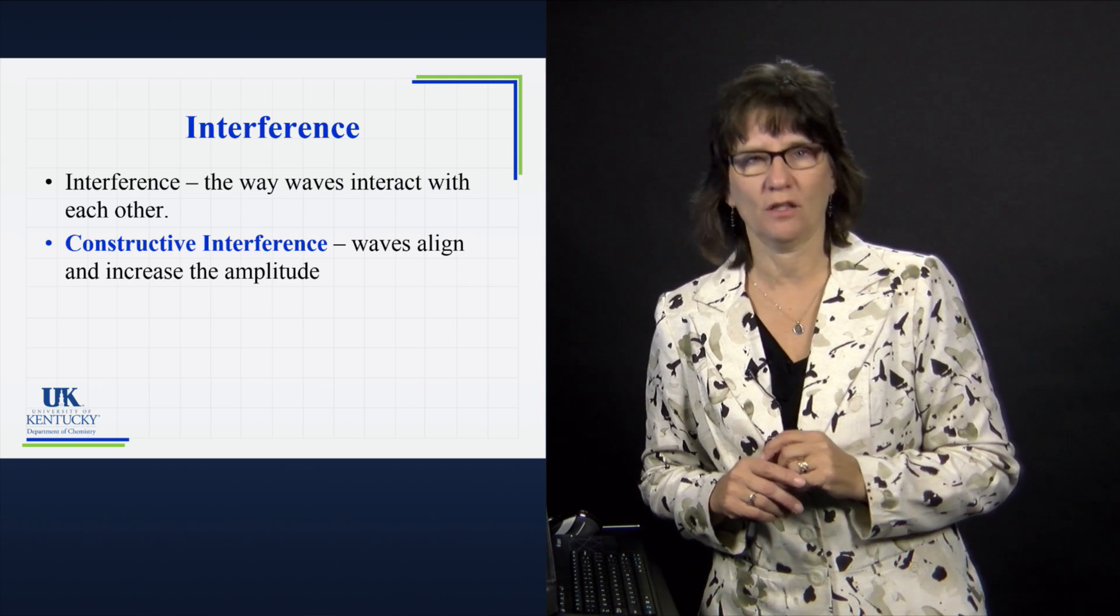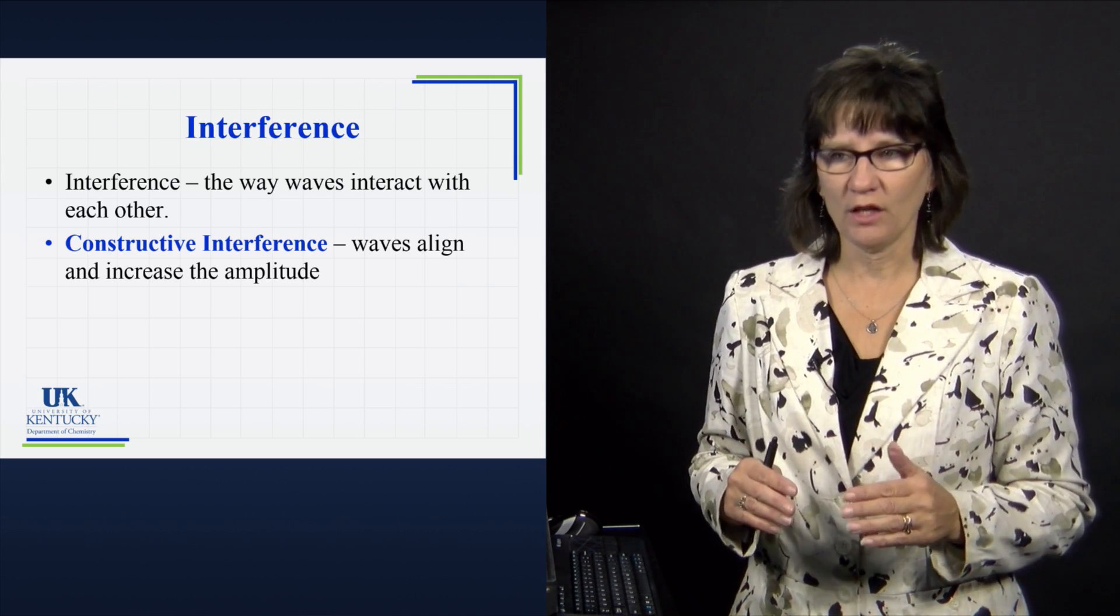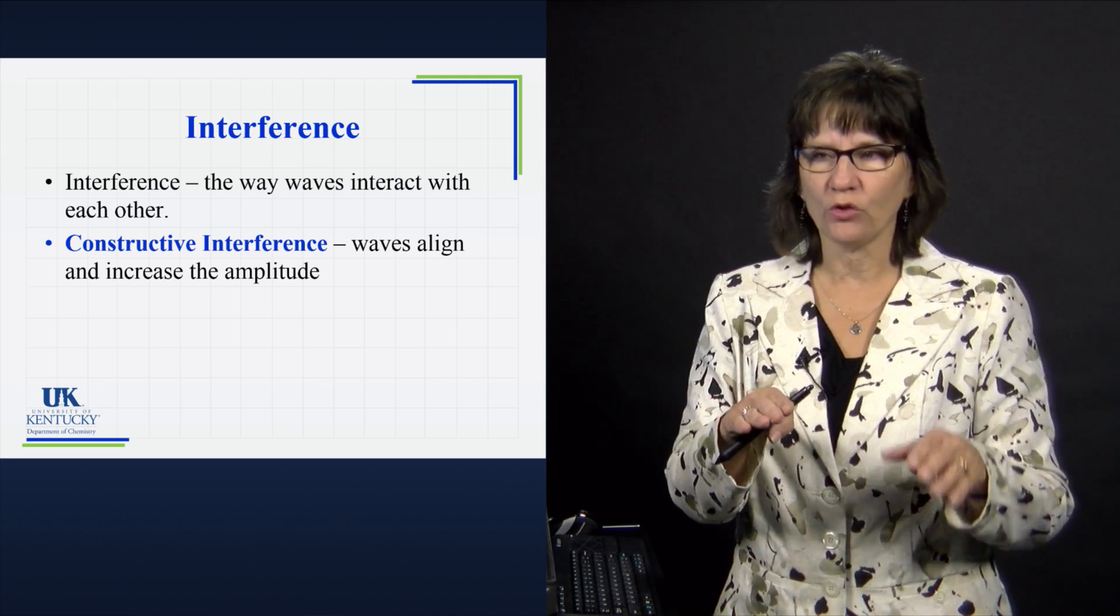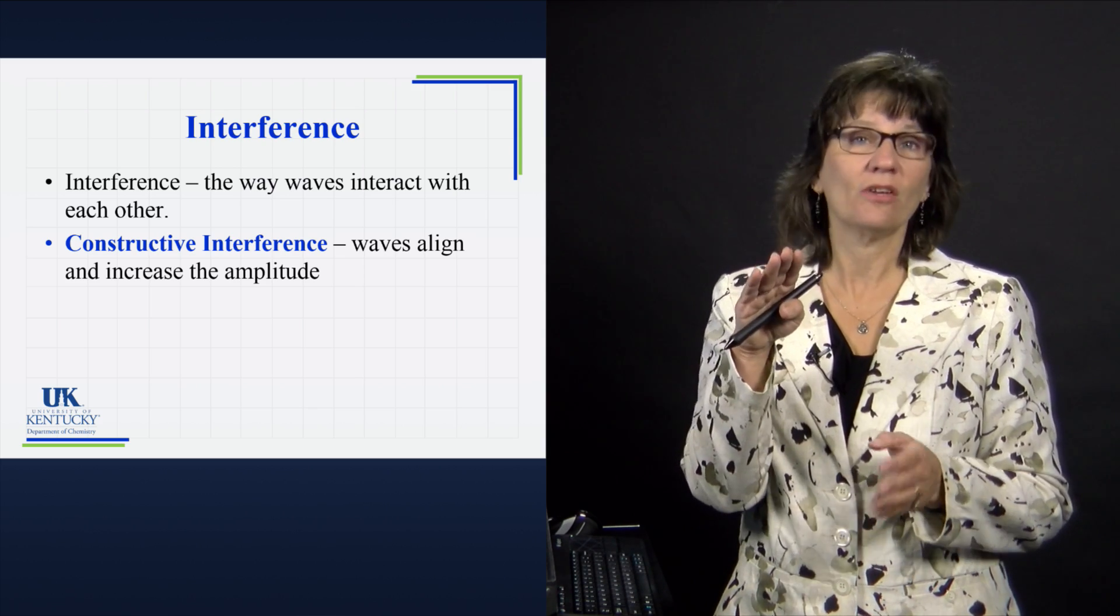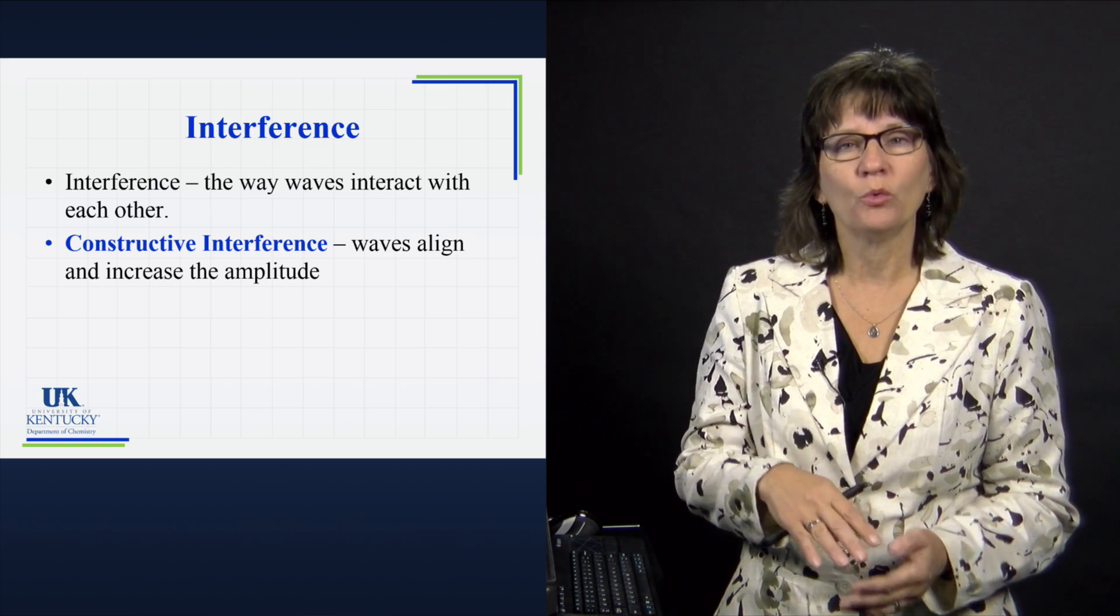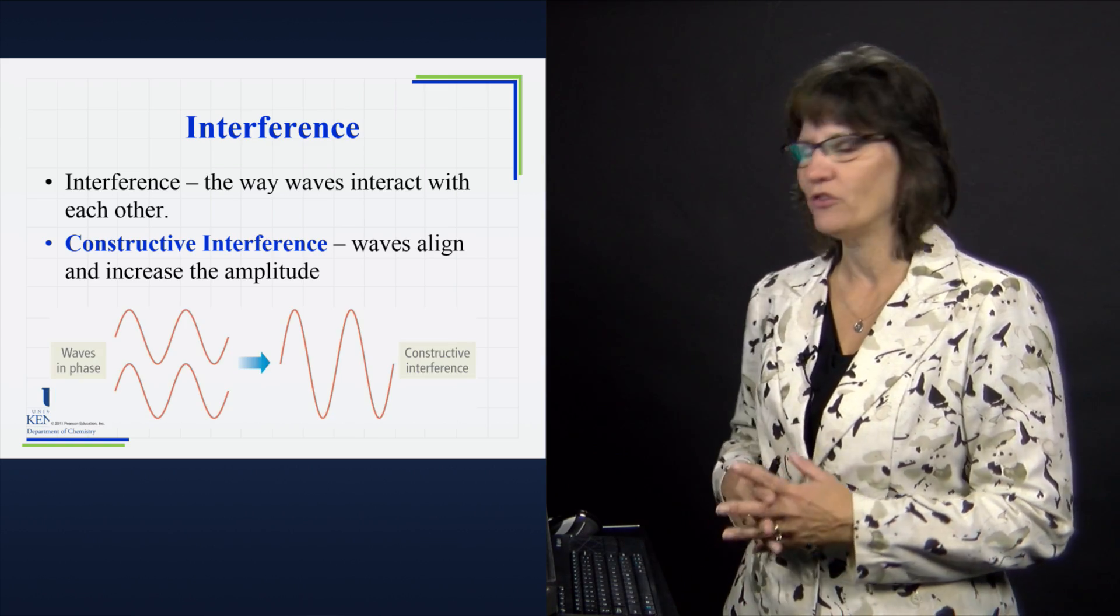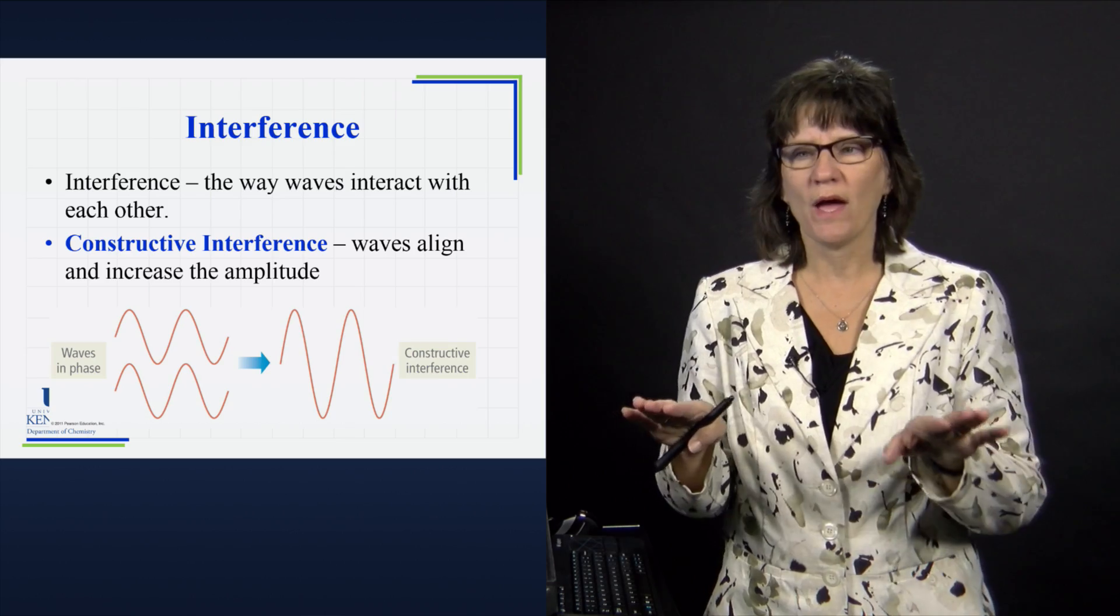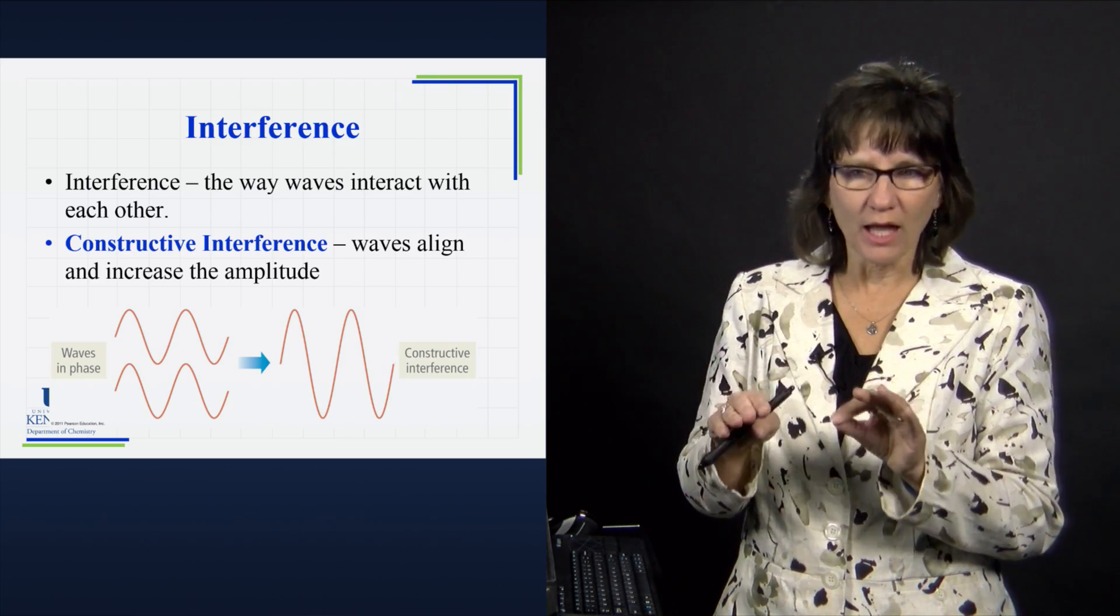There is what's called constructive interference. In constructive interference, the waves amplitude or the peaks are aligning, the troughs are aligning, and what that will do will be increase the amplitude of that wave. So here's an image of that. Here are two waves that are aligned.